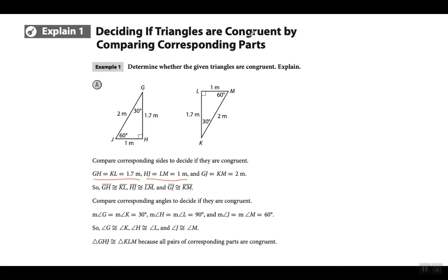En español: la primera sección es bien fácil. Tenemos que decidir si los triángulos son congruentes comparando las partes que corresponden. Es simplemente chequear los lados que corresponden para ver si miden igual, y los ángulos que corresponden y chequear si miden igual. Si todos miden igual, entonces los dos triángulos son congruentes. Aquí los ángulos son 30, 60, y 90 en ambos triángulos y los lados son 2, 1, y 1.7 en ambos. Siempre hay que fijarse en los lados y ángulos que corresponden.